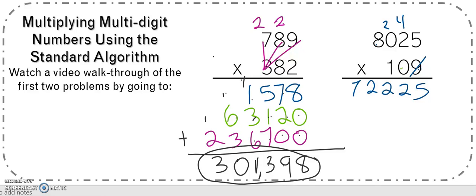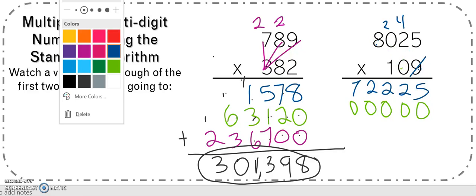Go down to my next line. Now I'm going to be working in this place, and I can put my 0. And 0 times 5 is 0. 0 times 2 is 0. 0 times 0 is 0. 0 times 8 is 0. So that was an easy one.